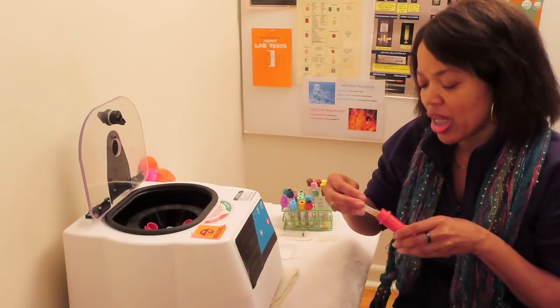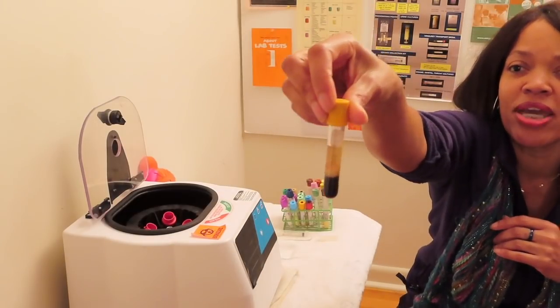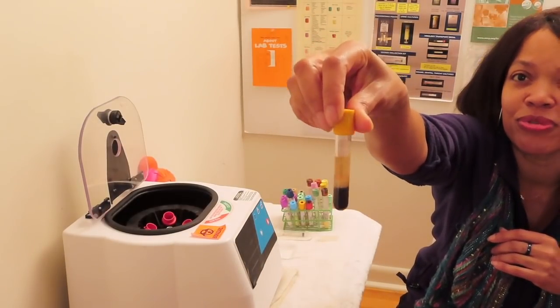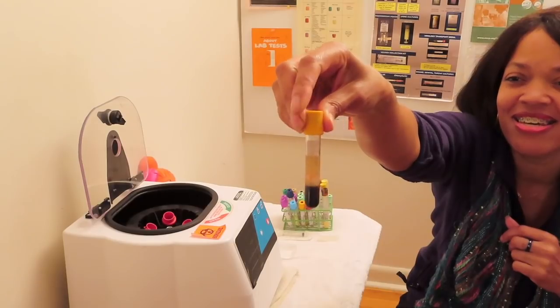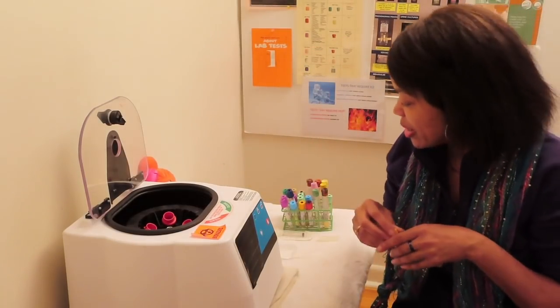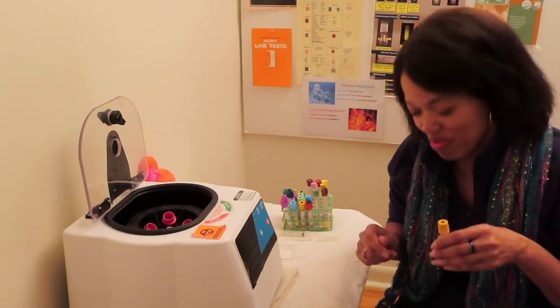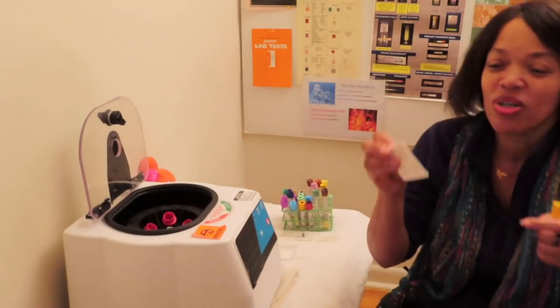So we did let our blood clot. And we spun it. And this is what we have. We have clear, beautiful serum. Got that? You see that? Yes. So now just pretend for the sake of pretending that I am in. You know what I forgot to do? I forgot to label the tube. Okay.